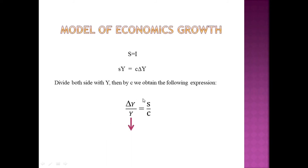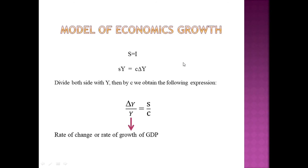Dividing both sides by Y, and cancelling Y on both sides, we obtain the final expression: s/C = ΔY/Y. This equation is named the rate of growth of GDP. This is the main equation of the Harrod-Domar model.